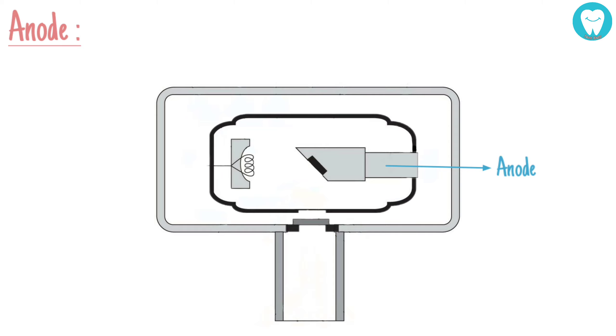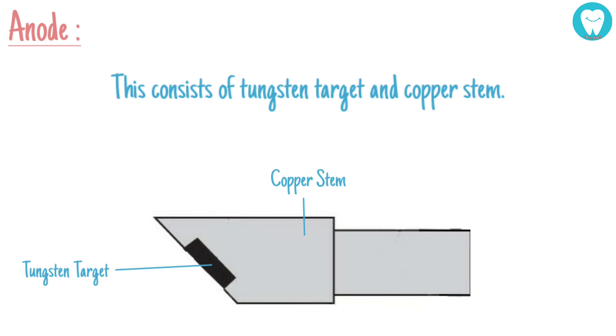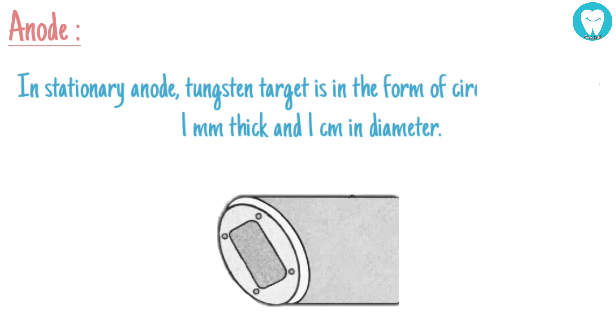Now let's take a look at the anode. This consists of a tungsten target and a copper stem. In a stationary anode, the tungsten target is in the form of a circular disc about 1 mm thick and 1 centimeter in diameter.